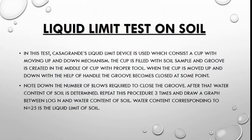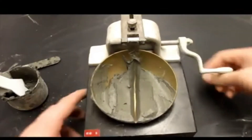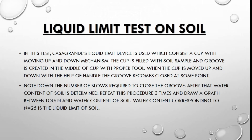Now moving toward the liquid limit test on soil. In this test, Casagrande's liquid limit device is used, which consists of a cup with a moving up and down mechanism. The cup is filled with a soil sample and a groove is created in the middle of the cup with a proper tool. When the cup is moved up and down with the handle, the groove becomes closed at some point. Note down the number of blows required to close the groove, then determine the water content of the soil. Repeat this procedure three times and draw a graph between log N and water content of soil. The water content corresponding to N equals 25 is the liquid limit of soil.